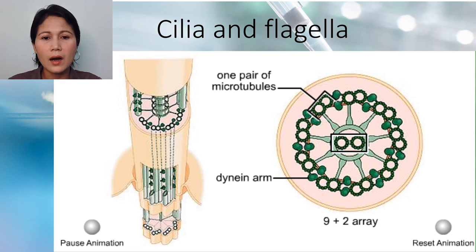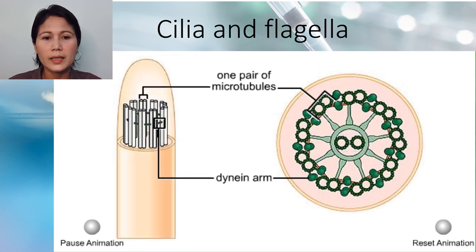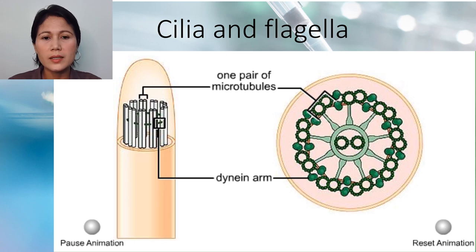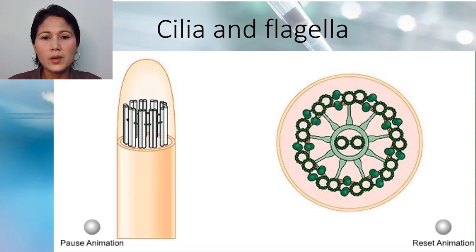A dynein arm extends from each doublet to another doublet in the ring. When the flagellum is not bent, all microtubule doublets extend the same distance. Inputs of ATP cause the dynein arm of one doublet to attach to the pair in front.